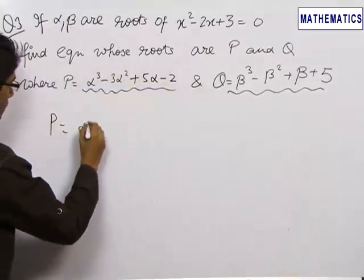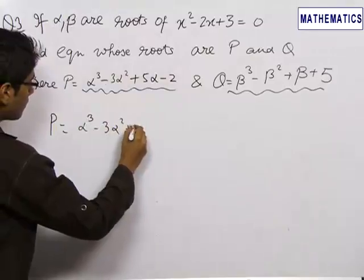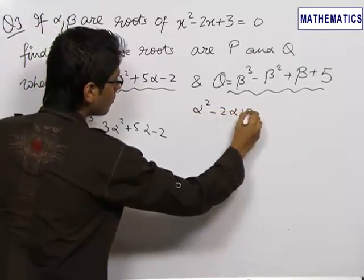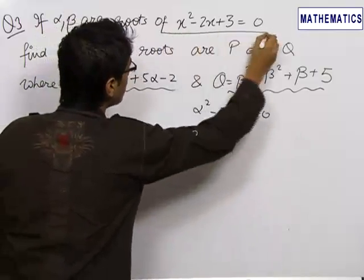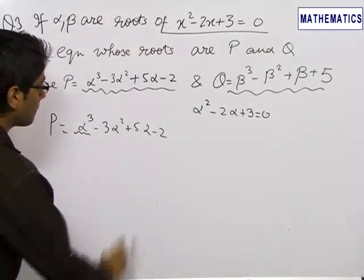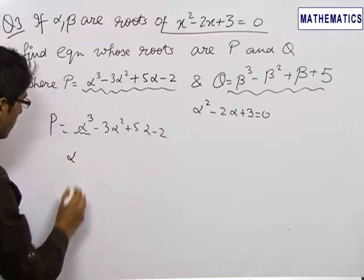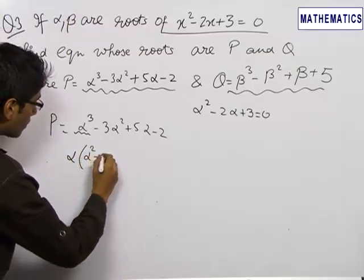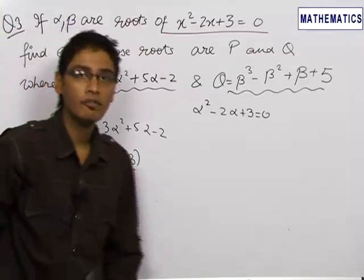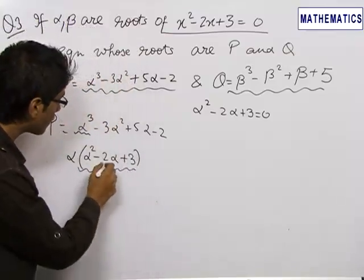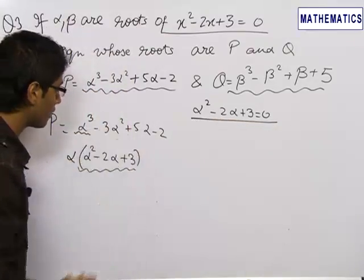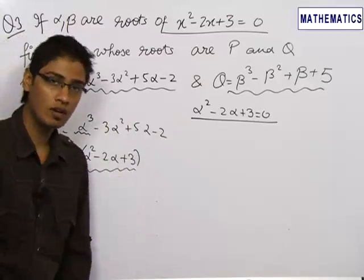p is given as α³ - 3α² + 5α - 2. Since alpha is a root of the quadratic equation, we know that α² - 2α + 3 = 0. We try to reduce this cubic term by writing it as α(α² - 2α + 3). The trick is to create the factor (α² - 2α + 3) throughout, since we know its value is 0.